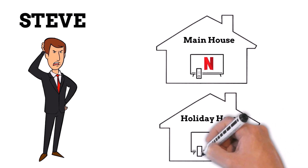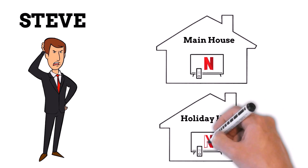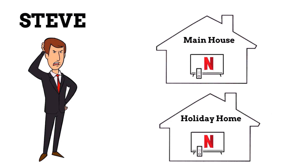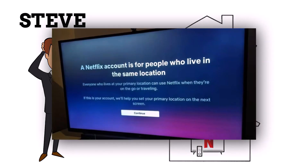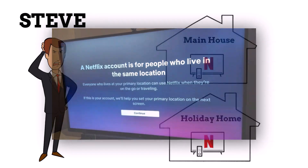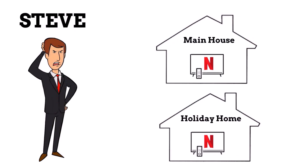He just used to be able to do it, but following their recent changes is now presented with an error screen when he tries to log into Netflix from his summer holiday home location, saying he does not appear to be signing in from his household IP address, so they block him. He is therefore trying to think of a solution to this problem so he is able to still watch Netflix when on holiday.